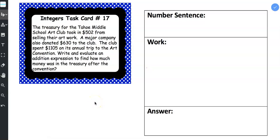Integers Task Card 17. The treasury for the Tahoe Middle School Art Club took in $502 from selling their artwork. A major company also donated $630 to the club.